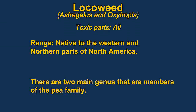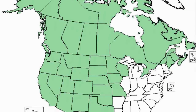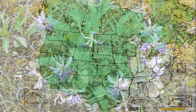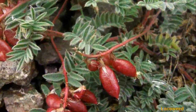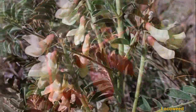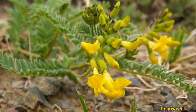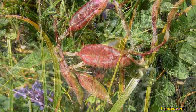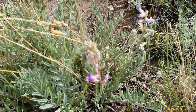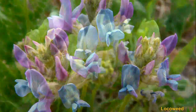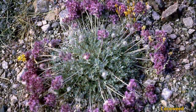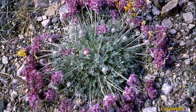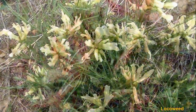Locoweed are widespread legumes found in western states, responsible mainly for cattle poisoning. Locoweed contain one of three toxins: miserotoxin, swainsonine, or selenium. The highest toxicity is in fresh plants, except for selenium. Often the animals will be emaciated and staggering, and horses may become belligerent.